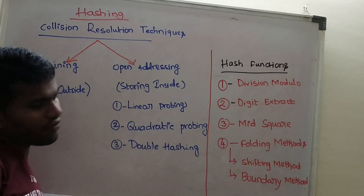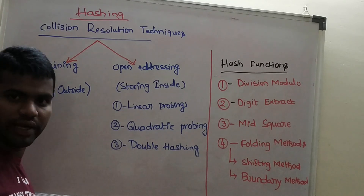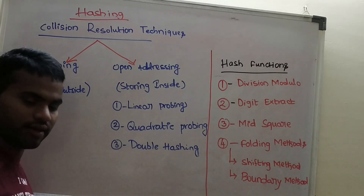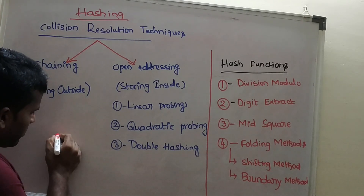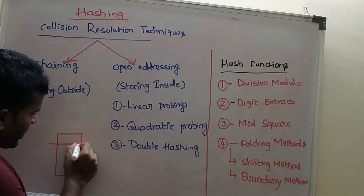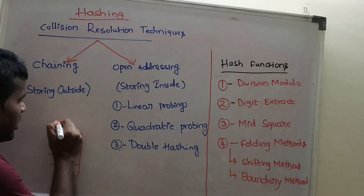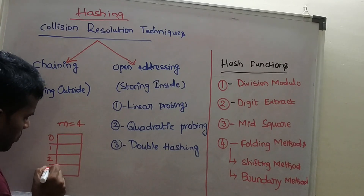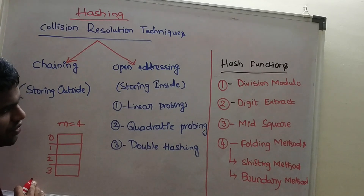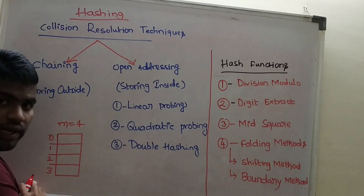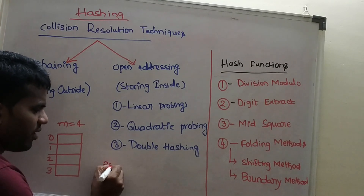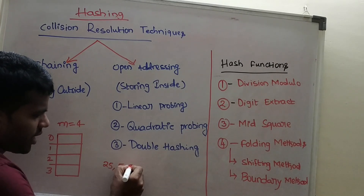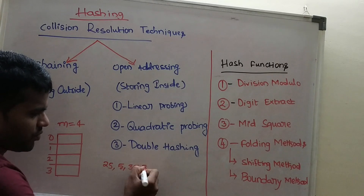When we are using hash functions or hash methods, we are getting keys stored in the same address or same location in the hash table. My table size m is 4, with slots 0, 1, 2, 3. Now I am using the division modulo method. In this method, I have keys 25, 5, 35, and 3 — so I have 4 keys.